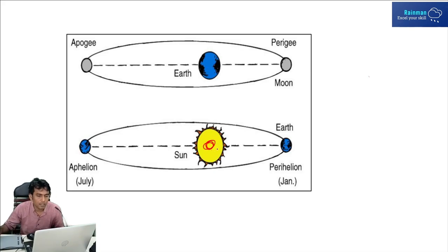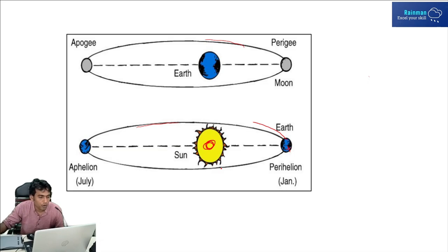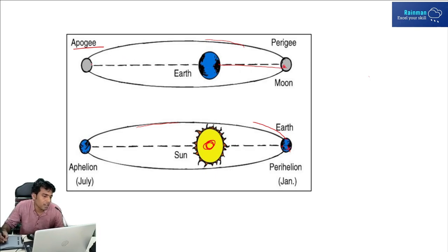Let's understand some basic things about tide. As you see on the screen, this is our Sun and this is our Earth. The Earth is moving around the Sun in an elliptical orbit, and the Moon is moving around our Earth, also in an elliptical orbit. When the Moon is located at the closest point to Earth while orbiting through its elliptical path, it is called the Perigee. When it is at the farthest point, it is called the Apogee.